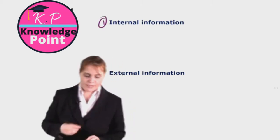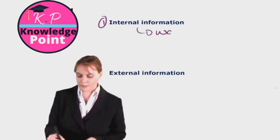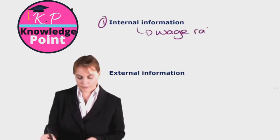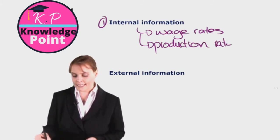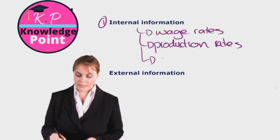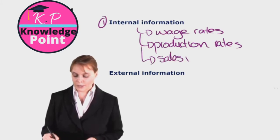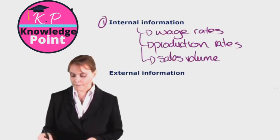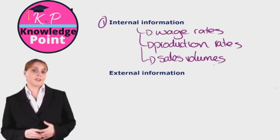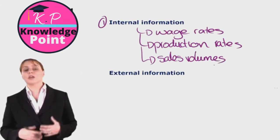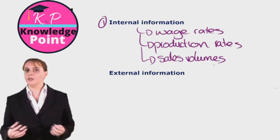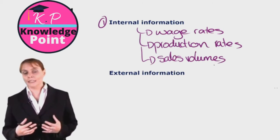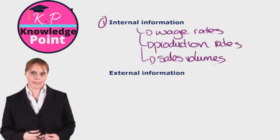Internal information would be things like wage rates, perhaps production rates — how many units of our product are we producing in an hour, for example. It may also include sales volumes. All of this information helps us understand what our labor costs are, how well our business is doing, how many units we are selling, and how efficient our production process is.